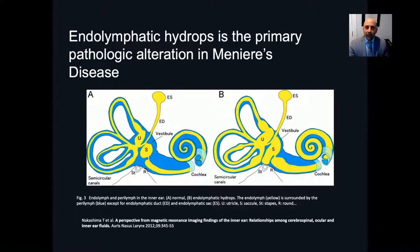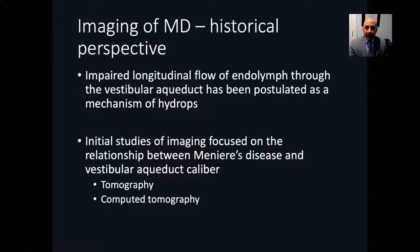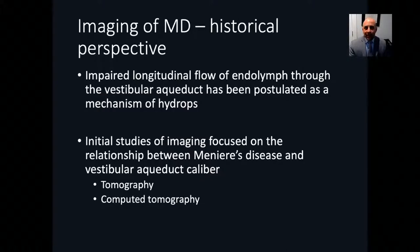As you know, endolymphatic hydrops is the primary pathologic alteration in Meniere's disease, discovered through autopsy studies of human temporal bones. Historically, imaging focused on the vestibular aqueduct, with the theory that impaired longitudinal flow through it was the mechanism of hydrops. With conventional tomography and CT, there was early ability to look at the vestibular aqueduct, leading to papers on its caliber or surrounding sclerosis. Eventually it was realized there wasn't much information from this method, and imaging of Meniere's disease went dormant for a while.